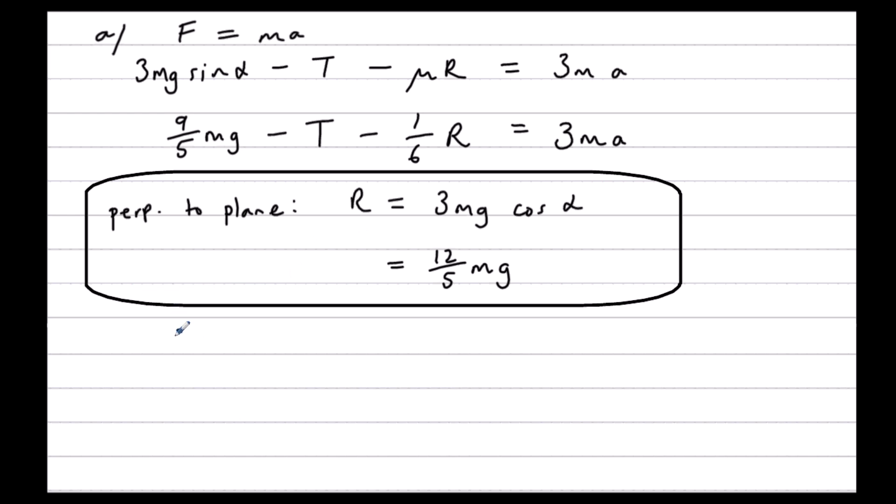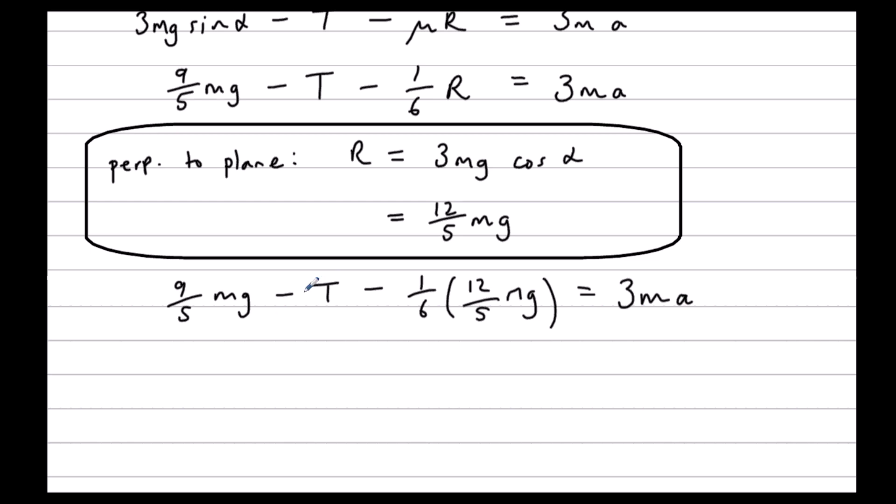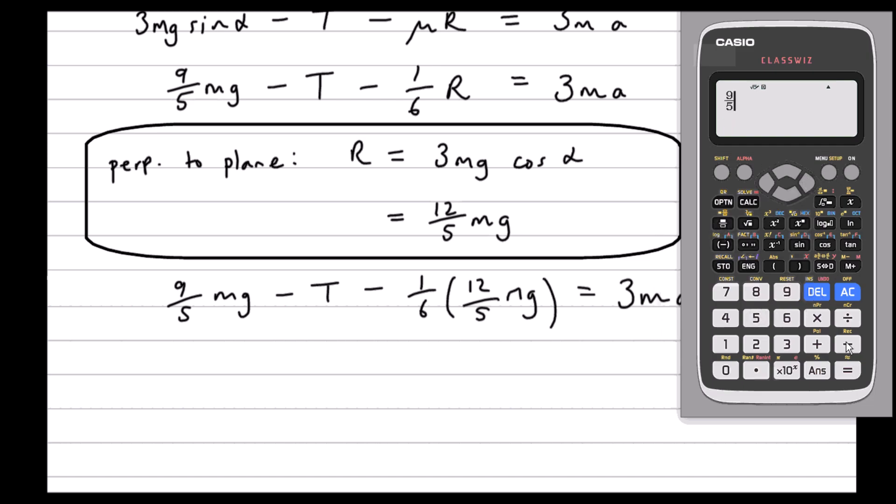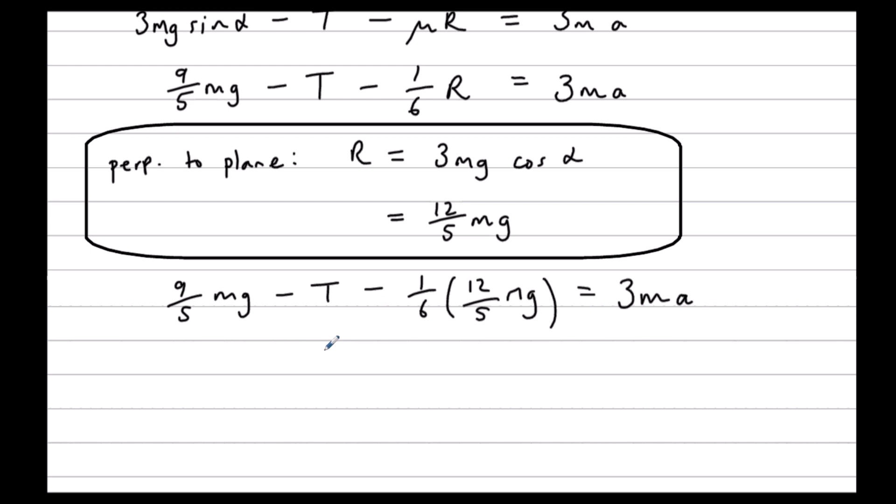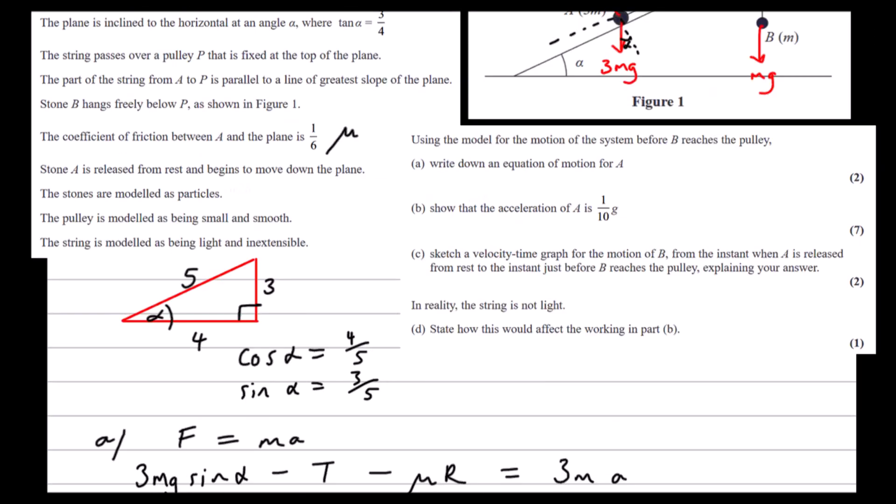So we have nine-fifths mg minus T minus a sixth of twelve-fifths mg equals 3ma. We can simplify this. Nine-fifths mg minus a sixth times twelve-fifths mg, which is two-fifths mg, so seven-fifths mg minus T equals 3ma. That's as far as we can go with this. But we can do an equation of motion for B as well.